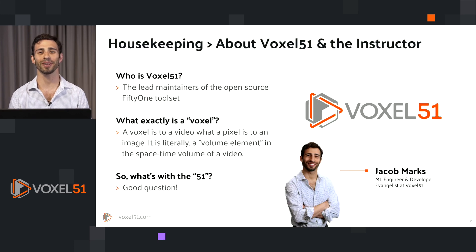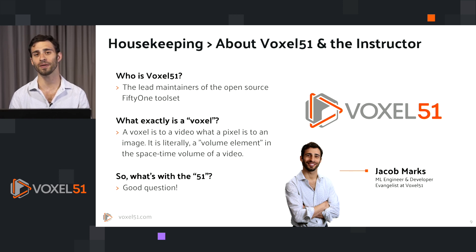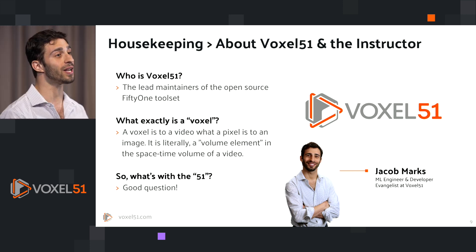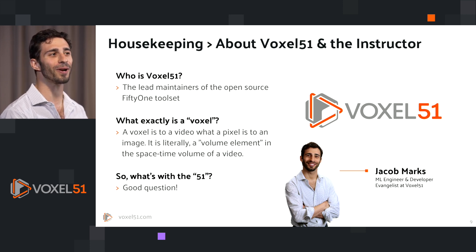Some quick housekeeping. My name is Jacob. I'm a machine learning engineer and developer evangelist at Voxel51. Voxel51 are the creators and lead maintainers of the open source FiftyOne toolkit for computer vision and machine learning. What is a voxel? A voxel is the volume element in the space-time volume of a video — it is to a video as a pixel is to an image. And what's the 51? That's a great question — you'll have to find out yourself.